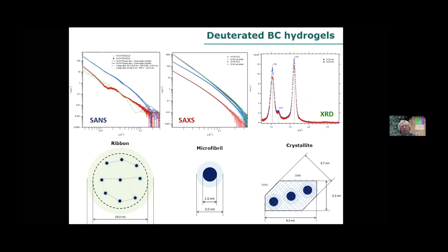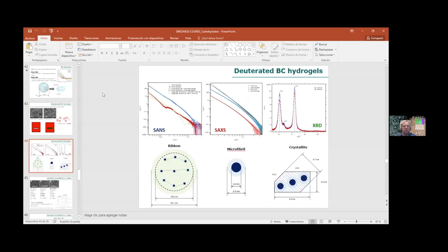Thank you very much, Marta. It clearly shows the usefulness of neutrons for studying carbohydrates. Is there anybody who wants to ask a question? My first question: what is the difference between hydrogel and gel? There is no difference. Hydrogel is the term typically used for carbohydrates because you have a large amount of water in the structure, but you can use both terms. In the case of hydrogels, the liquid phase will always be water.